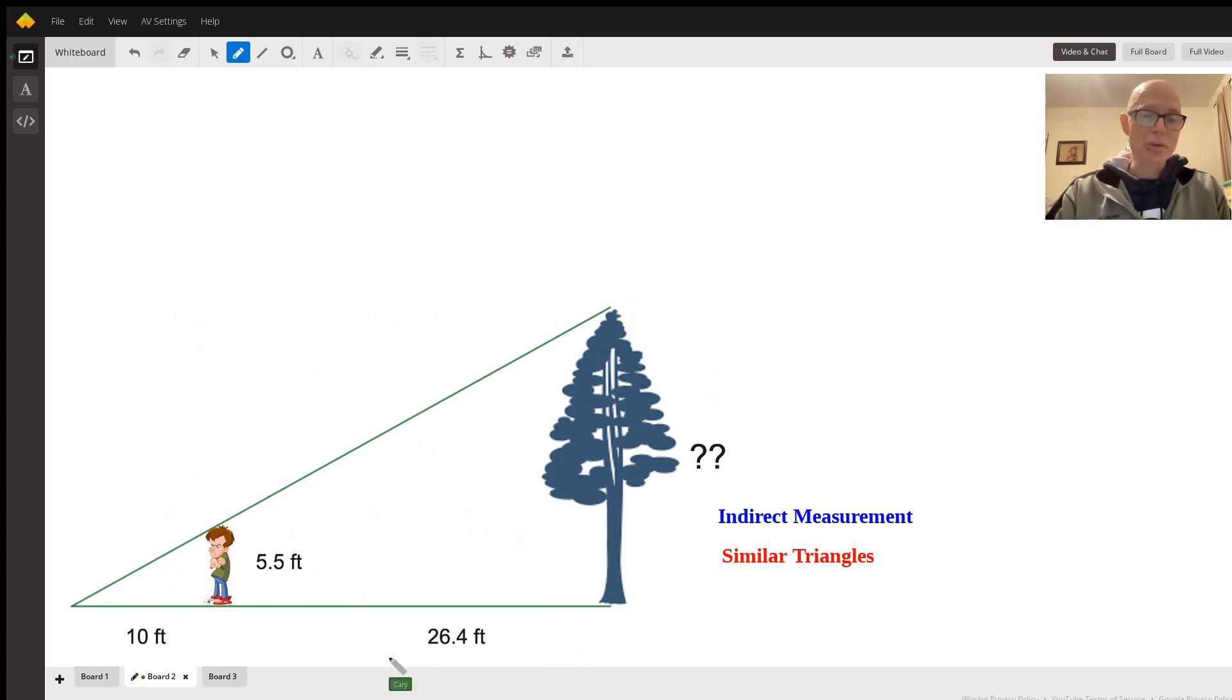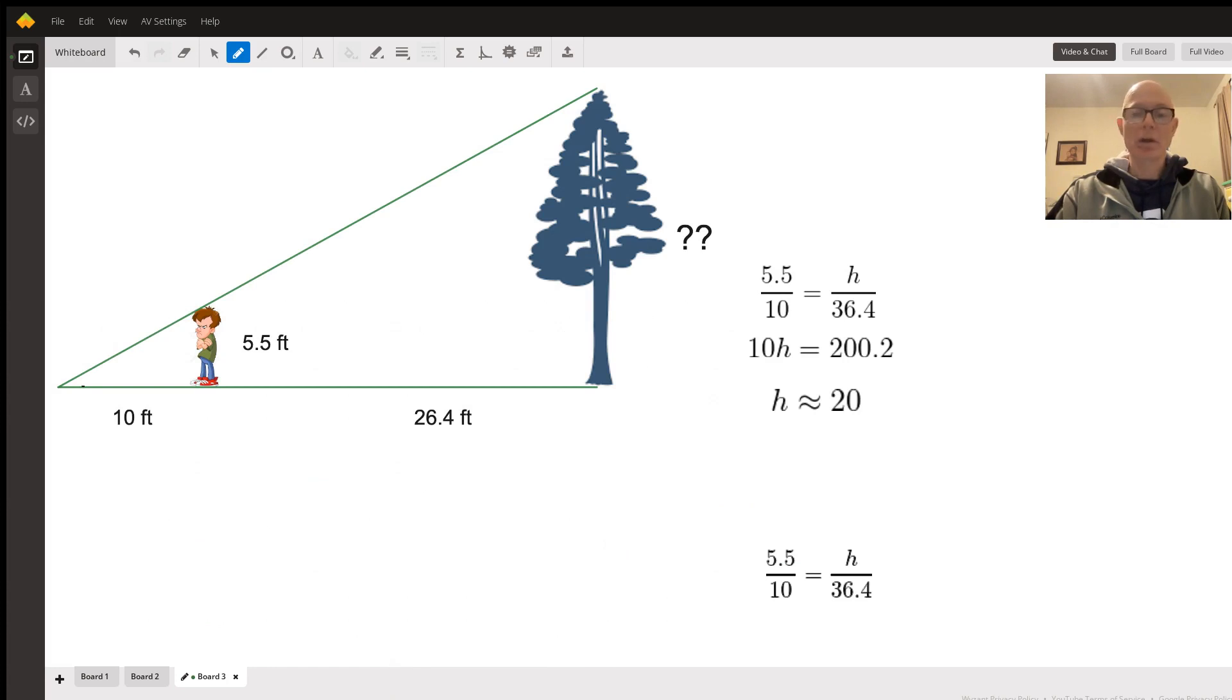That allows us to set up a proportion, which is a fraction equal to a fraction. Our first fraction is the young man's 5.5 feet and his shadow length of 10.